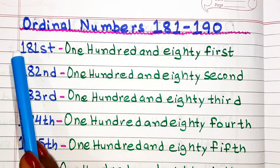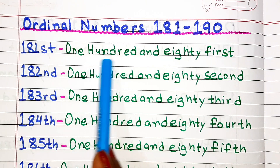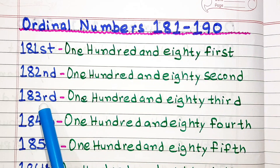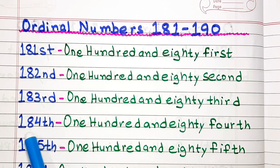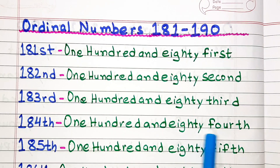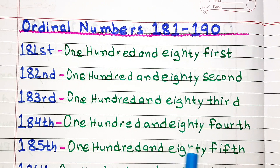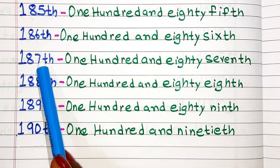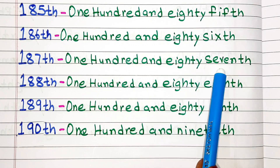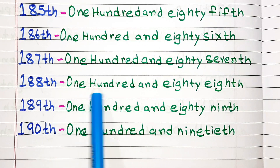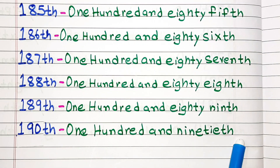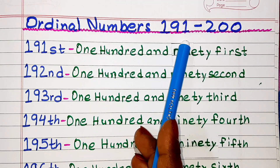Ordinal numbers from 181 to 190. 181st. 182nd. 183rd. 184th. 185th. 186th. 187th. 188th. 189th. 190th.